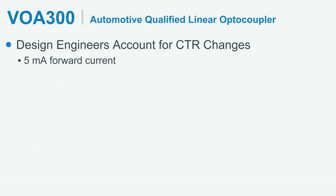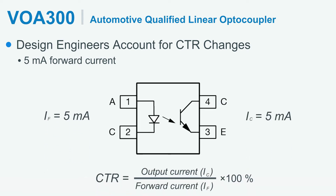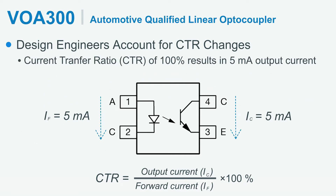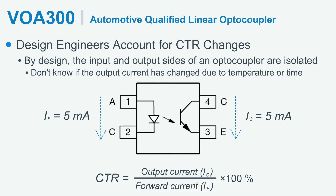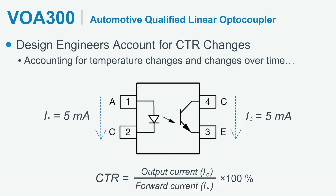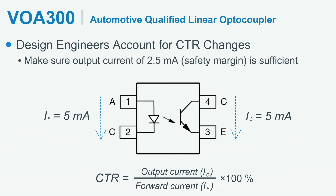Let us assume that 5 mA of forward current is flowing through the infrared emitter. Given a CTR of 100%, this would result in 5 mA of output current. By design, the input and output sides of the optocoupler are isolated, meaning the designer doesn't know if the output current has changed due to temperature or time. Thus, accounting for temperature changes and changes over time, the design engineer can make sure that an output current of 2.5 mA is sufficient to turn the output on — meaning there is a built-in buffer.